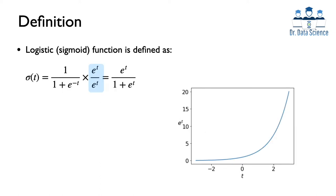Now let's look at another form of the logistic or sigmoid function you may find in some places. Starting from 1 over 1 plus e to the negative t, we multiply both numerator and denominator by e to the t. This gives e to the t in the numerator and 1 plus e to the t in the denominator. On the right side we now have the plot of e to the t, which is an increasing function.